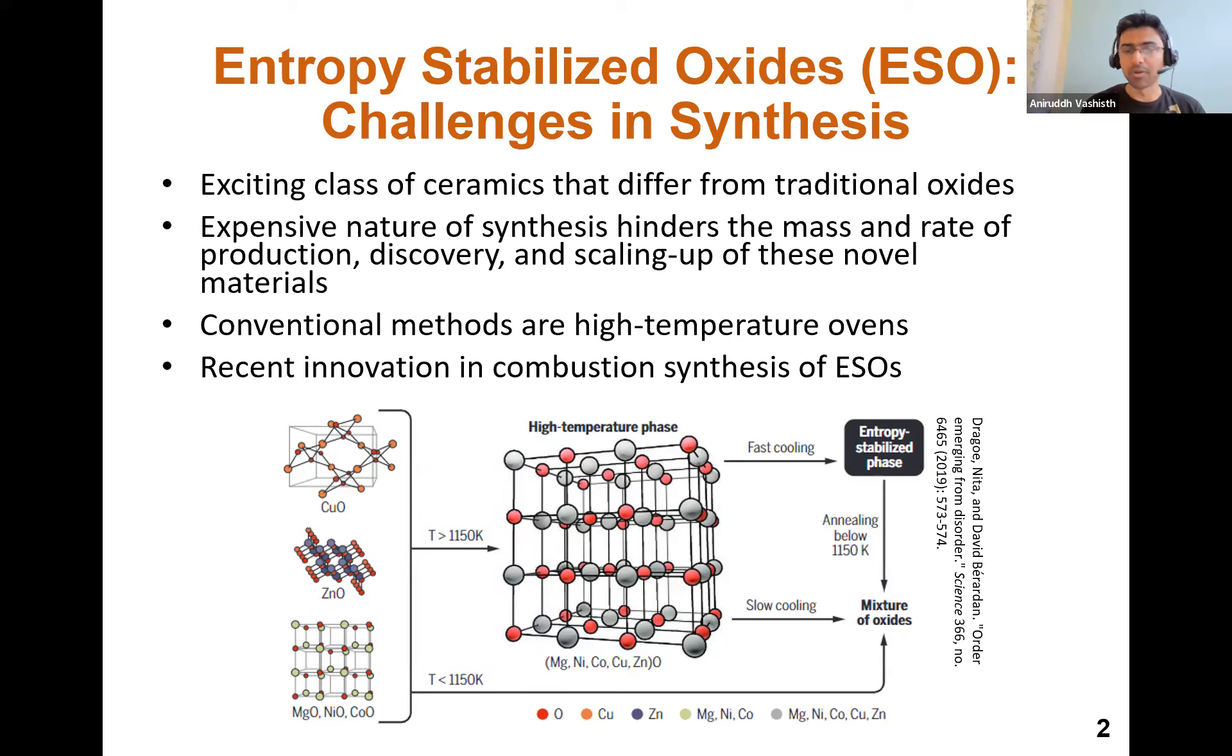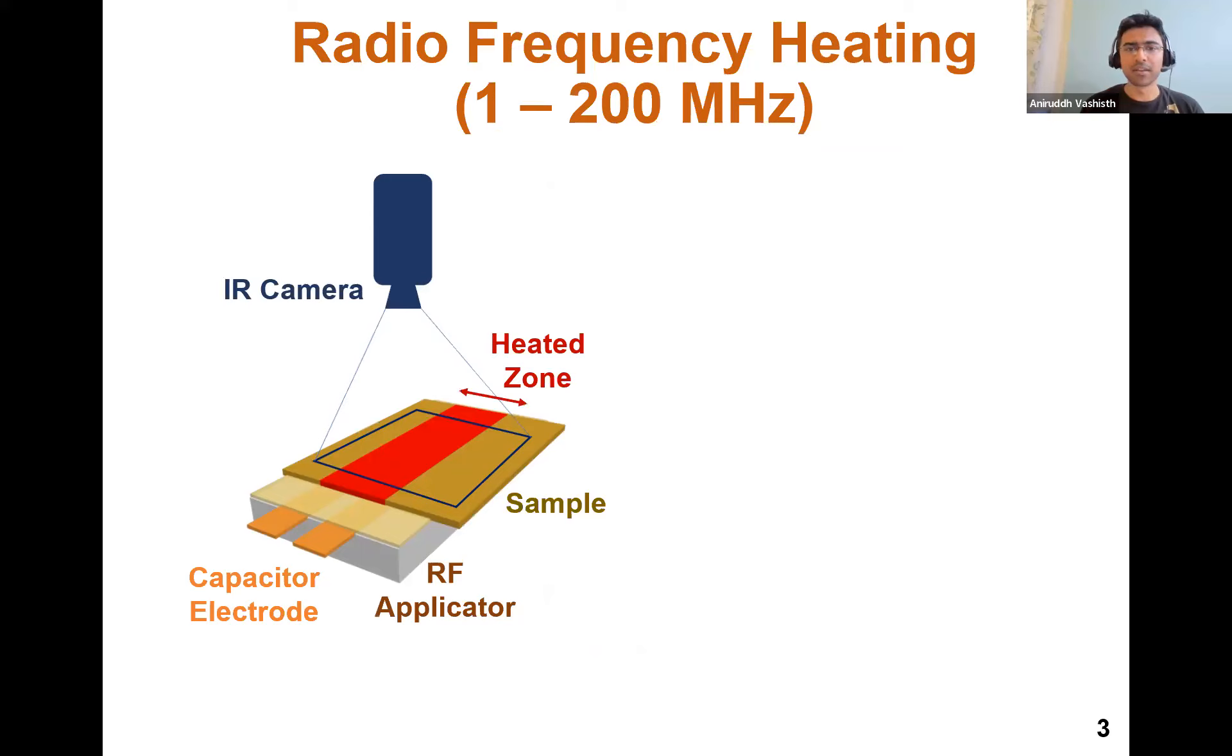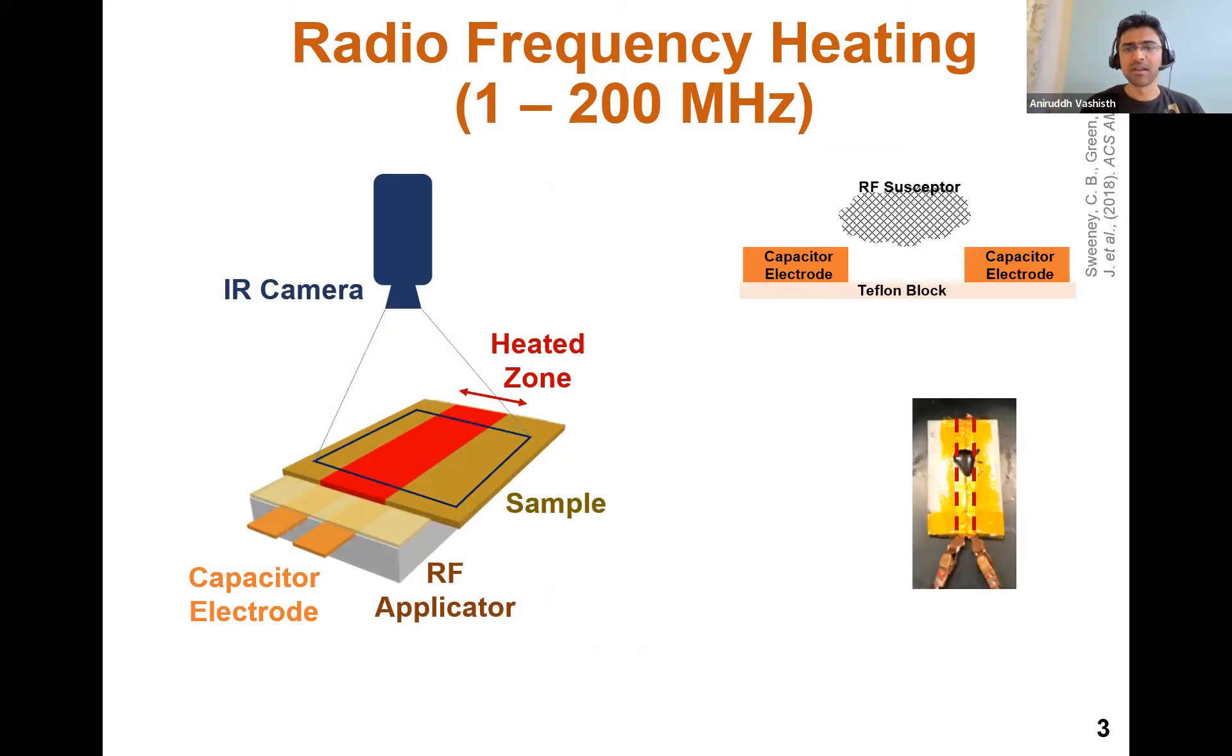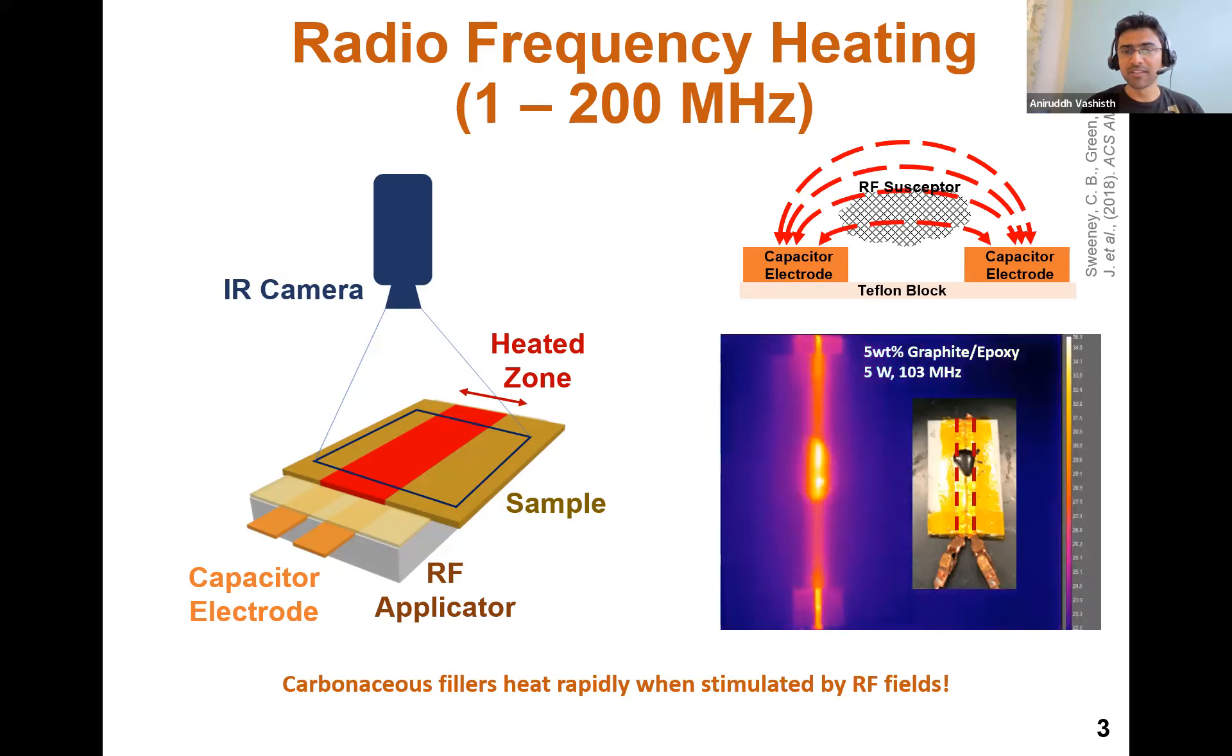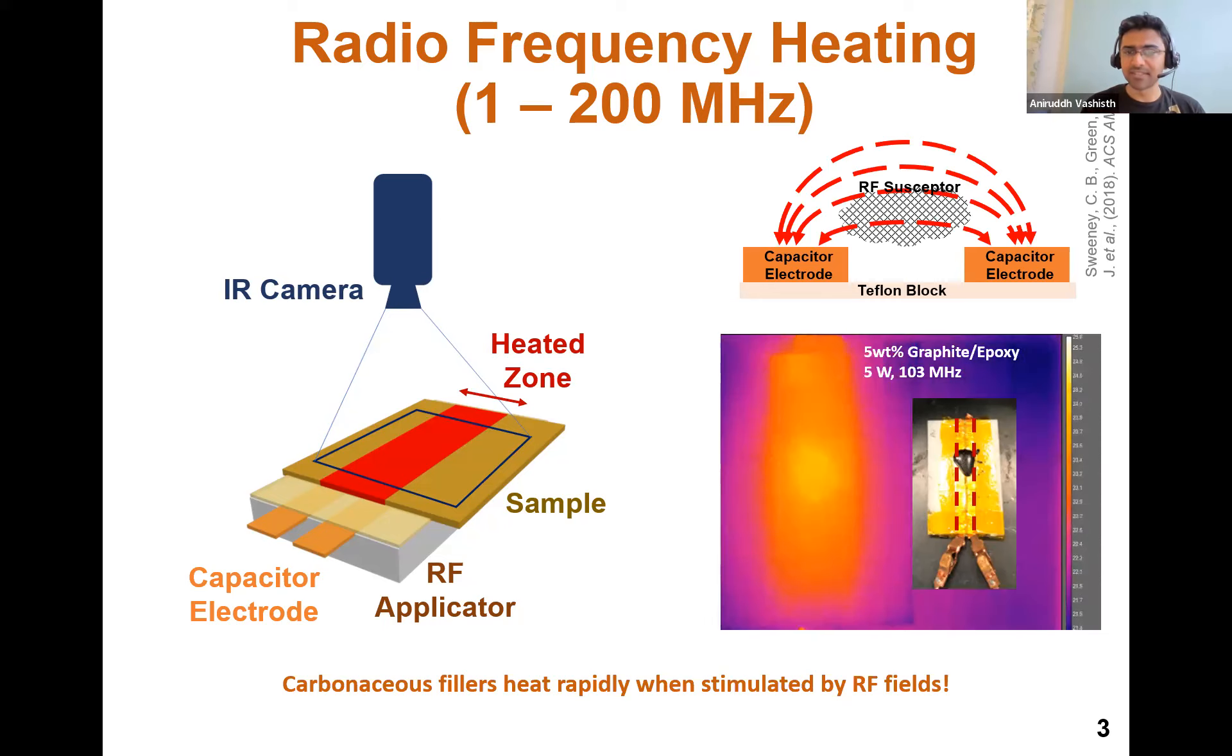but what we wanted to do was use this very interesting technology that we developed in our lab called radiofrequency heating, where we use frequencies in the range of 1 to 200 megahertz to rapidly heat materials that have some amount of conductivity. The setup looks like this—what you see here on the left is our two capacitor electrodes or a copper highway. And the radiofrequency susceptor or the material that you want to heat up is on the top right. As soon as you switch on the electromagnetic fields, there's a very strong fringing field that gets activated and that rapidly heats the material.